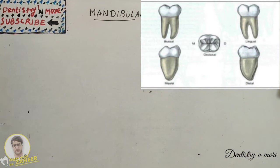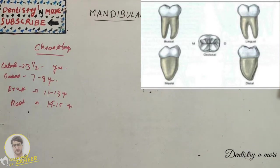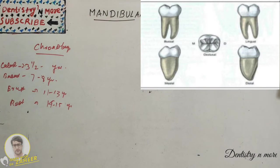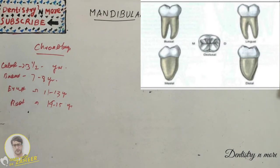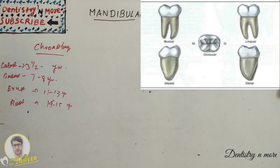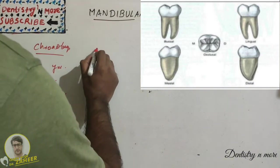That is about our systems of numbering. Next, we have the dimensions and chronology. In chronology, we have first evidence of calcification between 2 to 3.5 years, enamel completed between 7 to 8 years, eruption by 11 to 13 years, and root completion by 14 to 15 years.